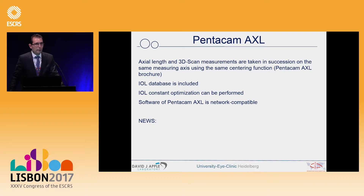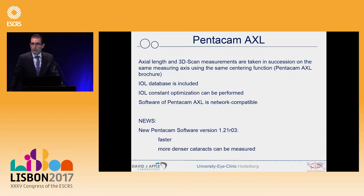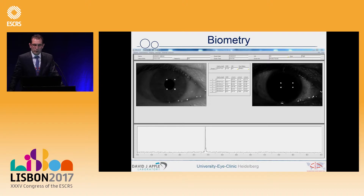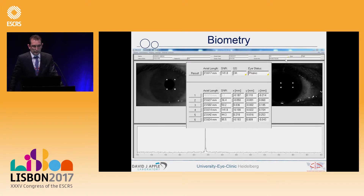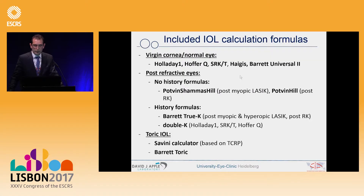It's network compatible, and the news for the new software is that it's faster. The scan process is very fast, and even denser cataracts can be measured. In the biometry setup, after taking six average axial length measurements, the intelligent software picks out every outlier statistically before calculating the real axial lengths dependent on the signal-to-noise ratio, which should be very high to achieve a perfect axial length measurement.